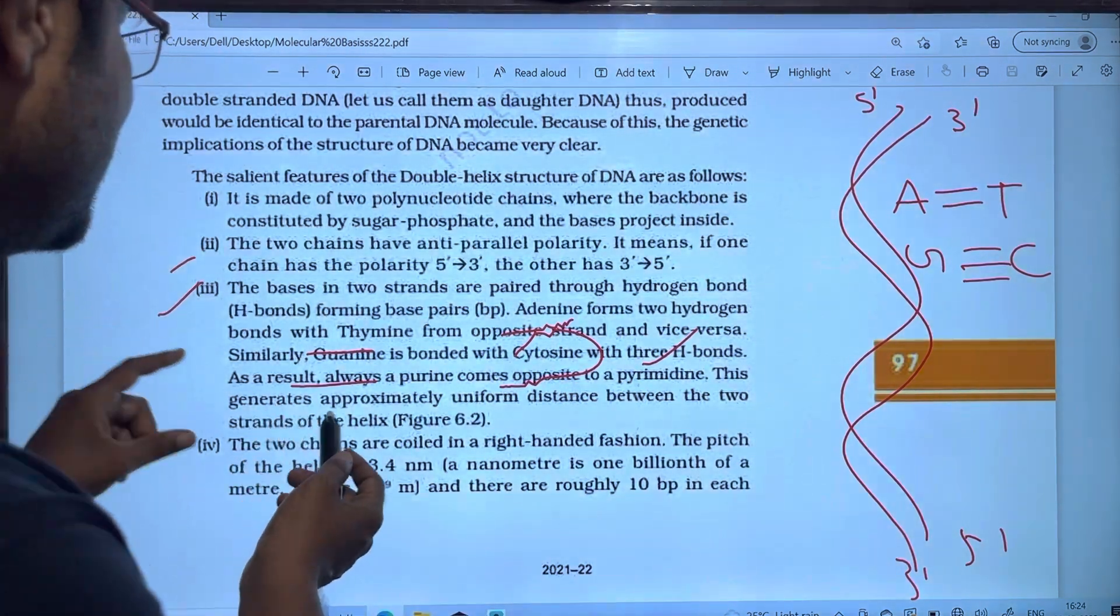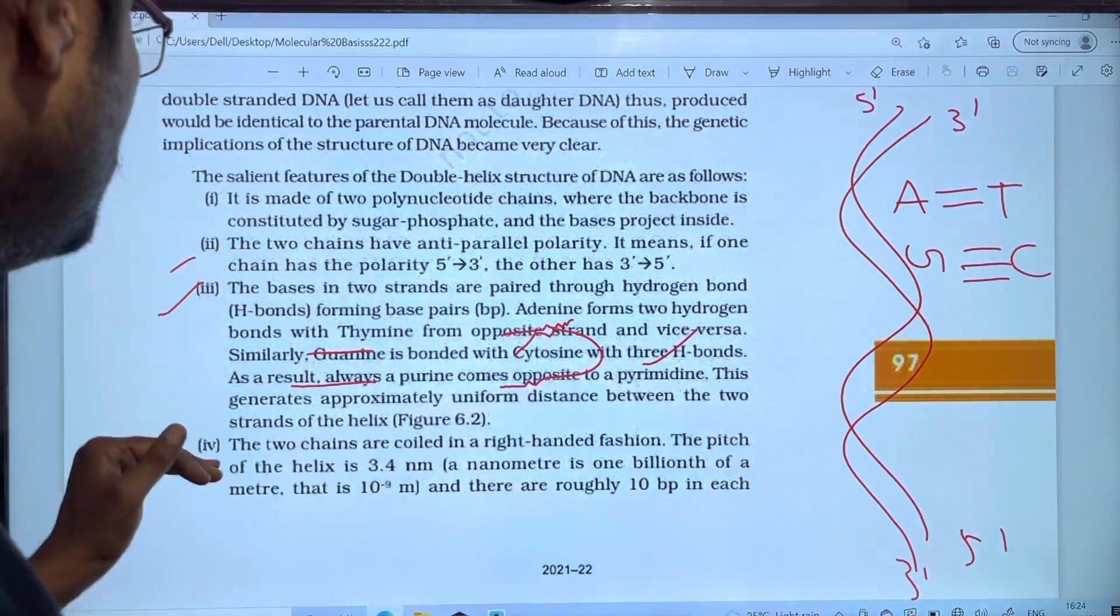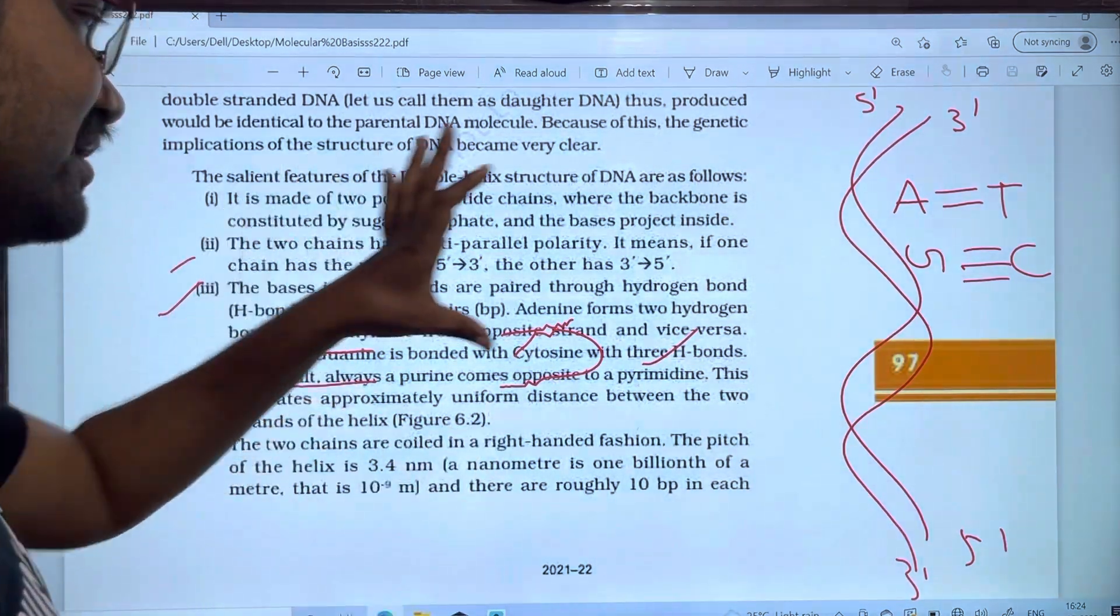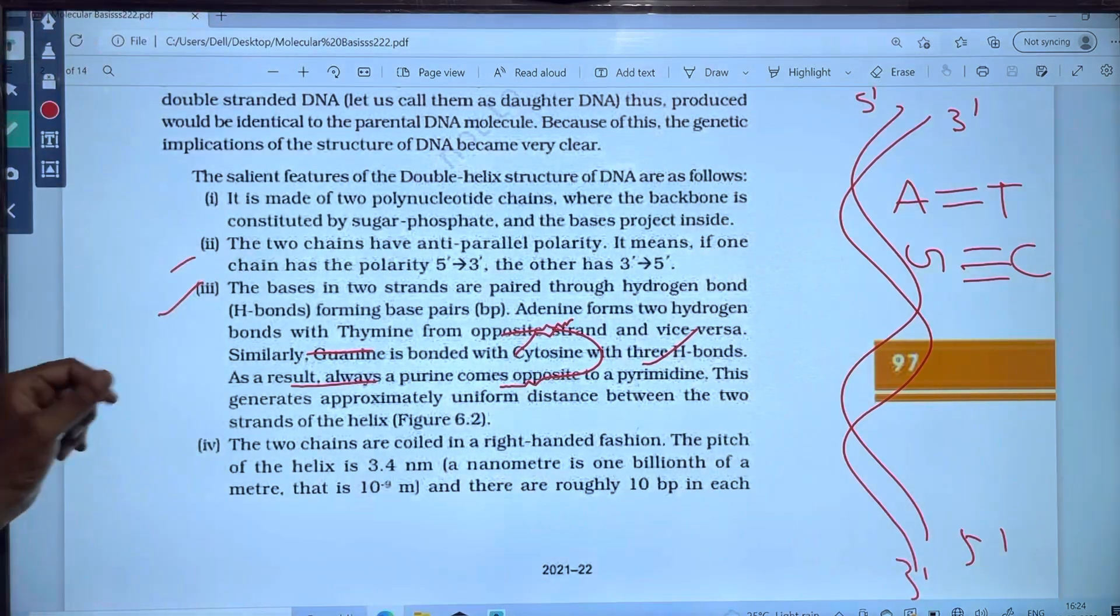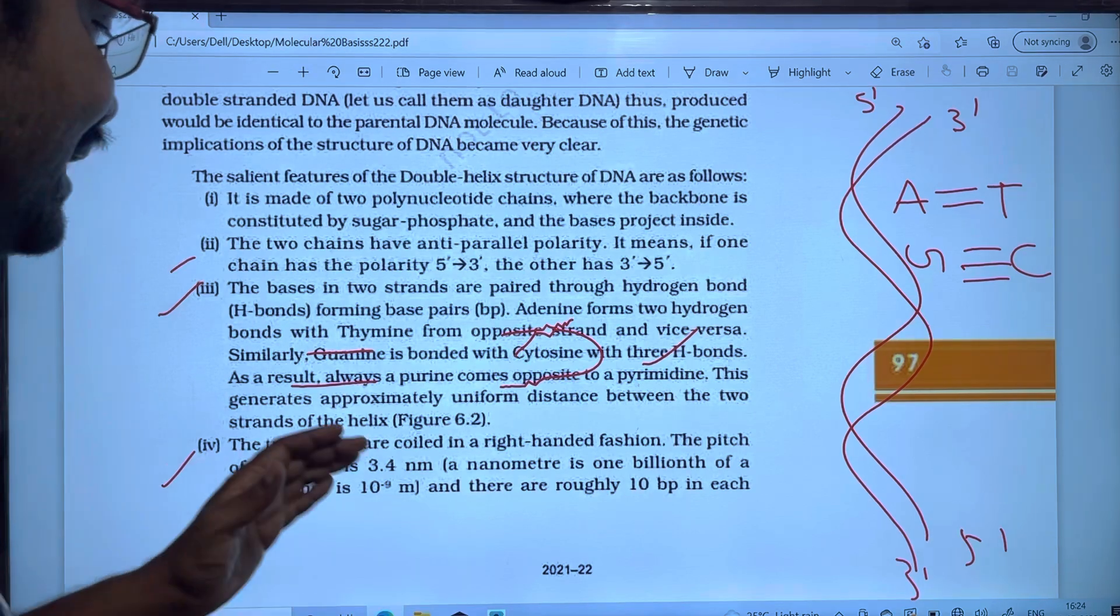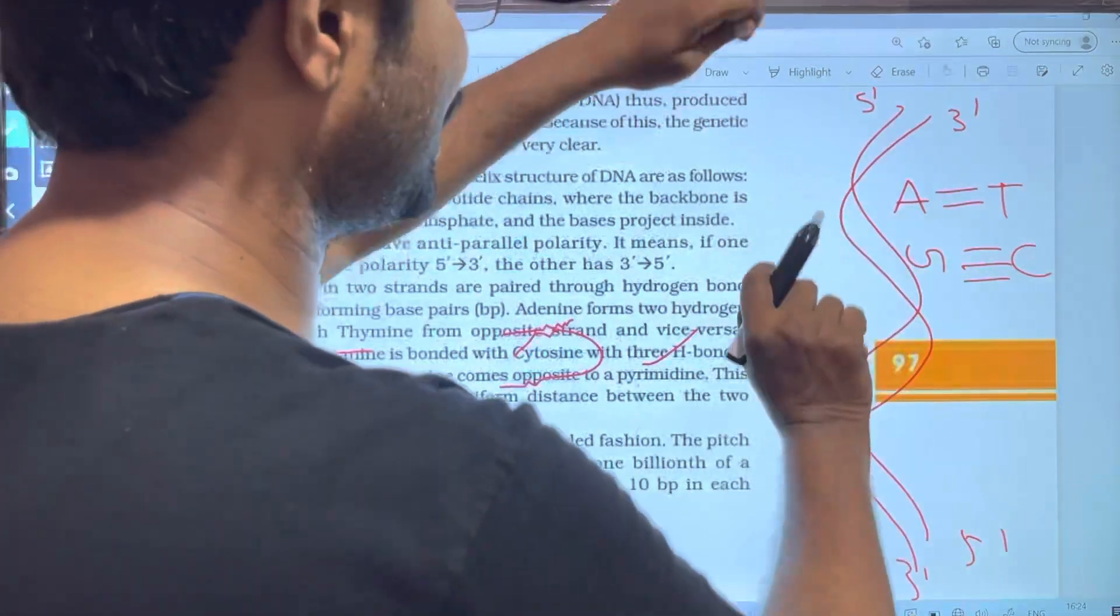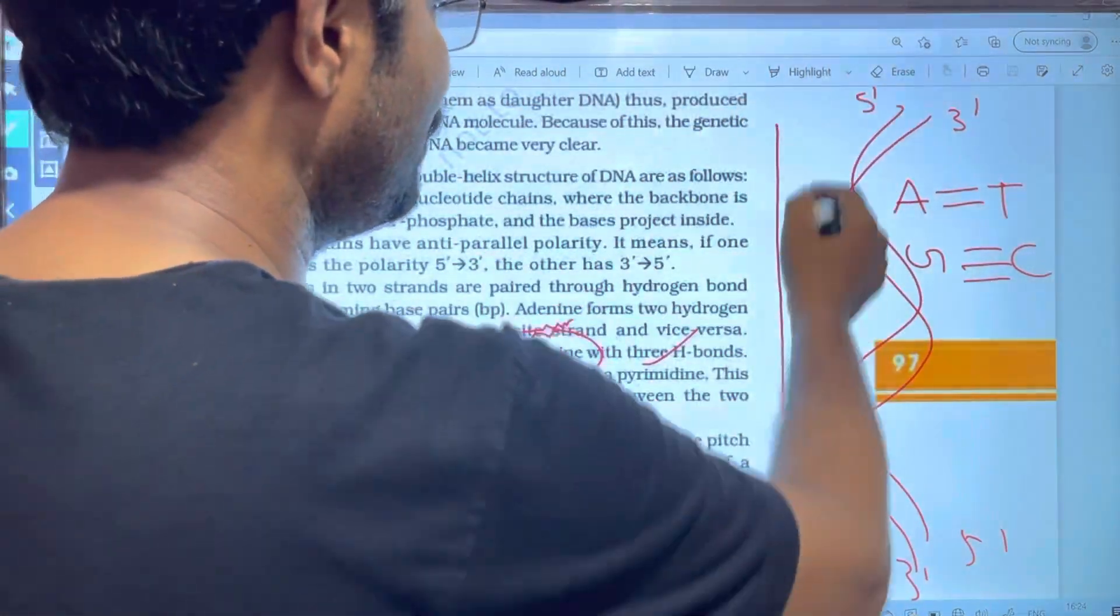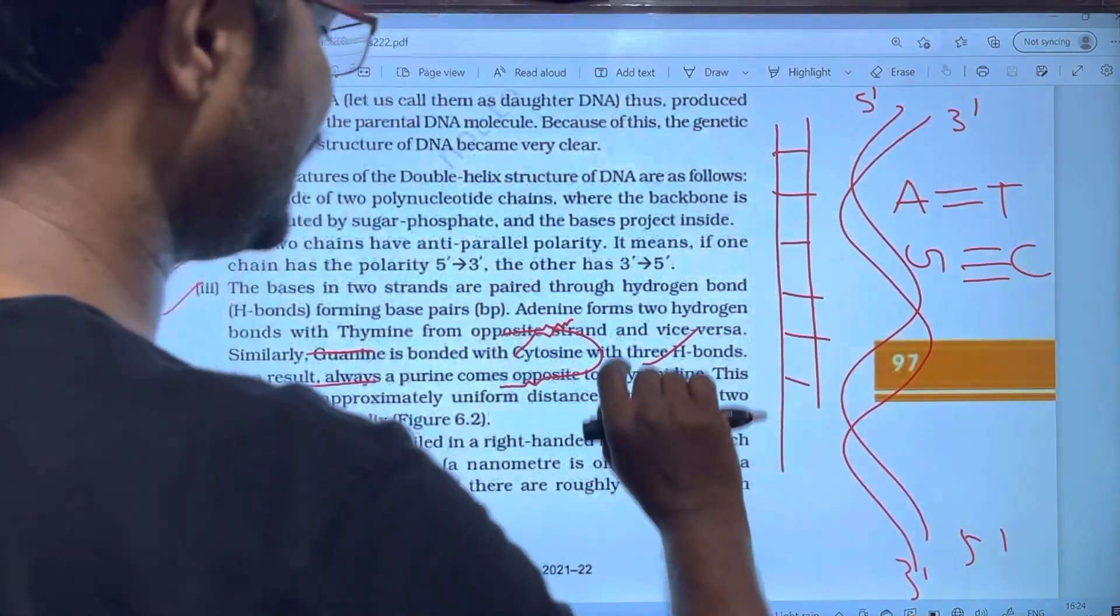This generates approximately uniform distance between two strands of the helix. This is the fourth point. The two chains are coiled in a right-handed fashion. This is the right-handed twist.